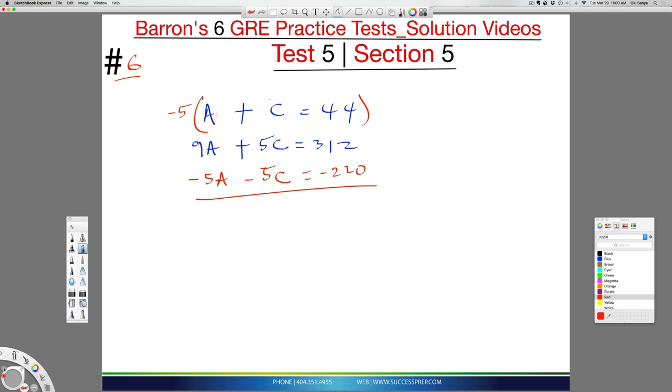This is what it is, it's now giving me. Obviously the 5C and the negative 5C go away. The 9A minus 5A is 4A there. And over here, I have 312 minus the 220. If you subtract that, that gives you 92.